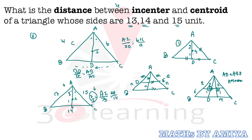So to summarize: the 2:1 ratio of the centroid is universal, and (b + c) upon a is the universal incenter formula. But for this specific question, assuming the base is 14, the ratio becomes 2:1, which equals the centroid ratio. However, AD and the median are two different lines here.